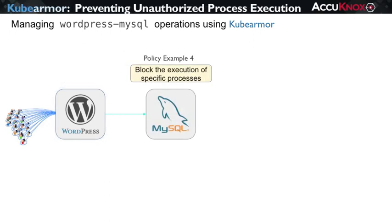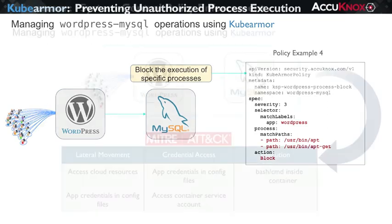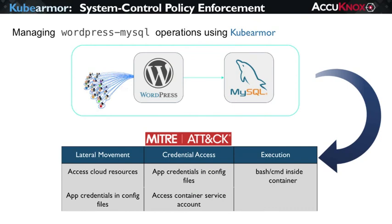As a last example, let's write a really useful policy to prevent unexpected executions of processes that I explicitly do not want to run in my container when it's deployed. For this example, I'm going to define a policy that targets the WordPress selector label. Then I'll demonstrate a process execution block of two binaries that I don't want to run in my container, apt and apt-get. And this is all you have to do to set that policy. With these quick examples, you can see how easy it is to set and enforce policies in your containers.